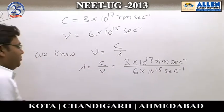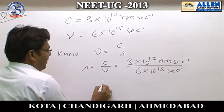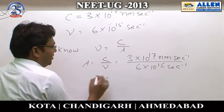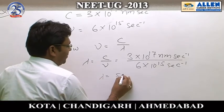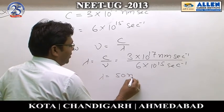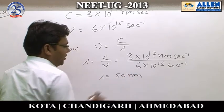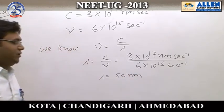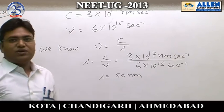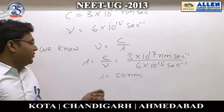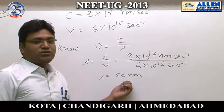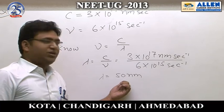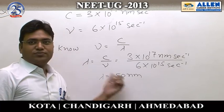The wavelength of light is 50 nanometers. The answer to this question is 50 nanometers, which corresponds to option number 4.